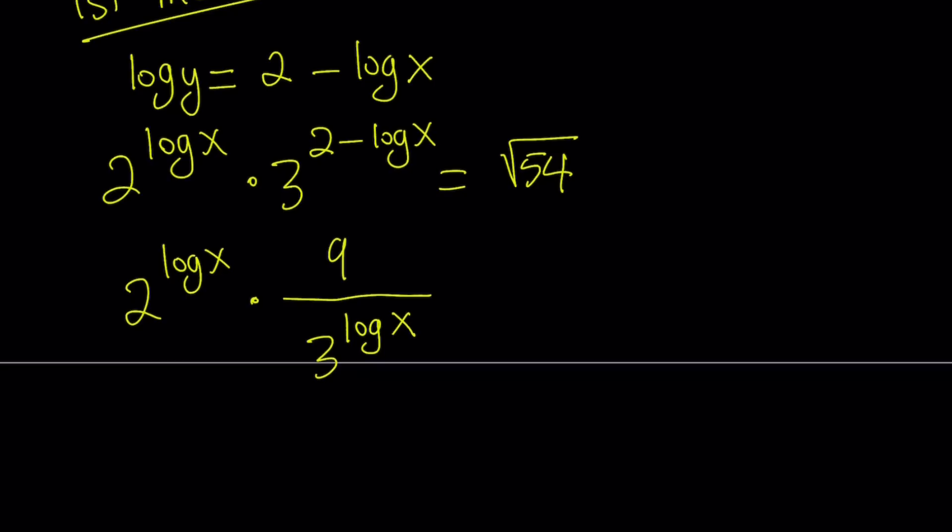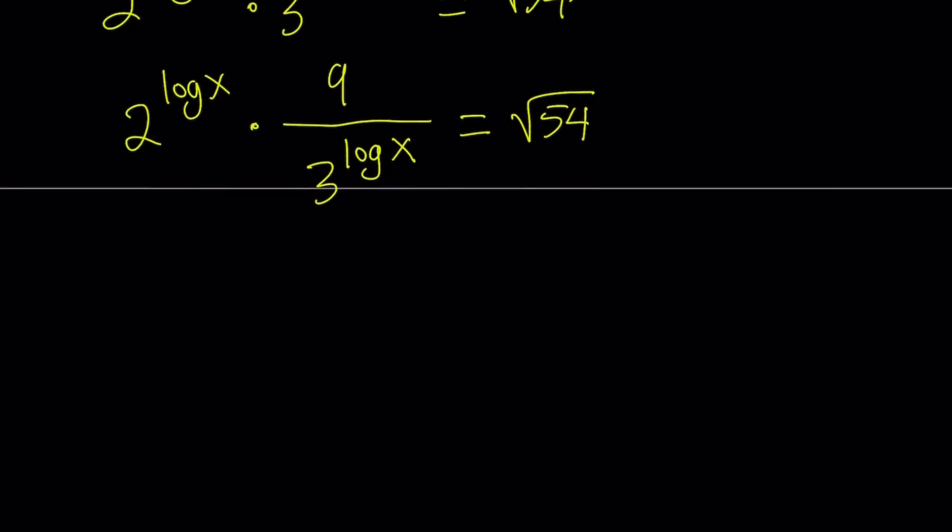Now, what about the right-hand side? Let's just write it as square root of 54 for now and then I'll arrange this in a little bit. Notice that here we have 2 to the power log x divided by 3 to the power log x. So those two expressions have the same exponent. Therefore, we can just write them together like this, 2 over 3 to the power log x.